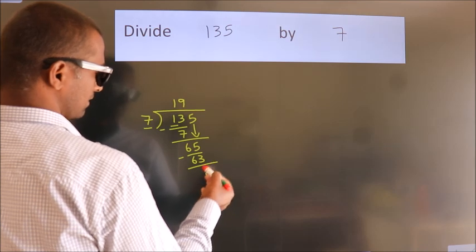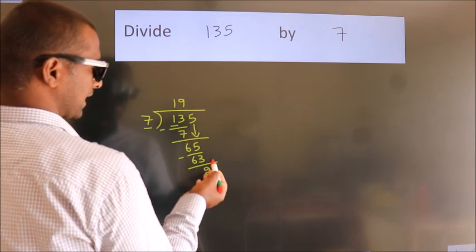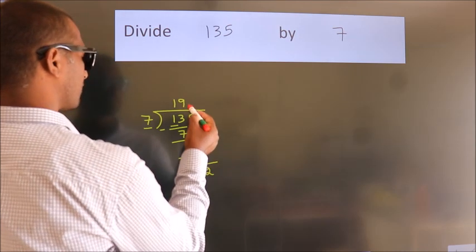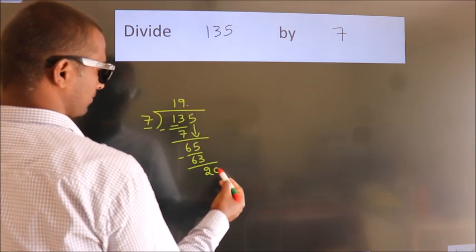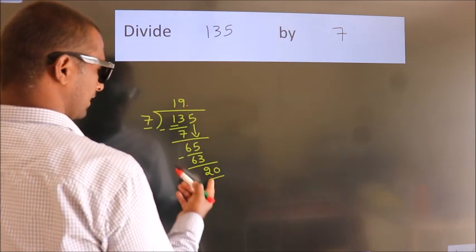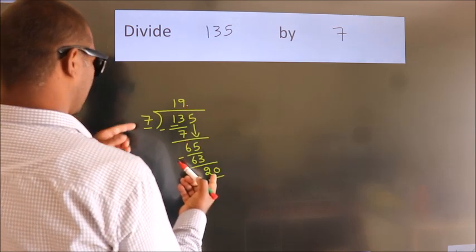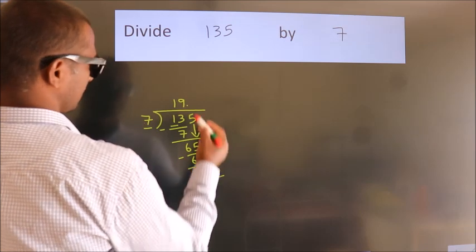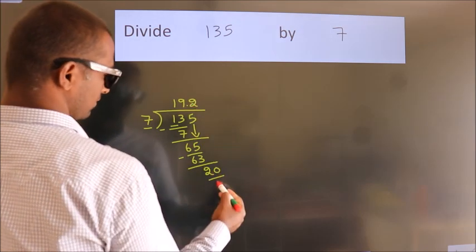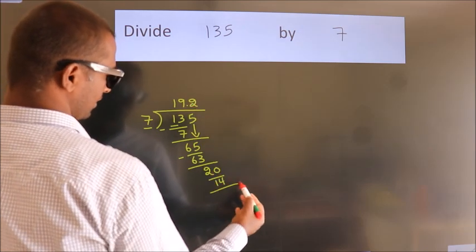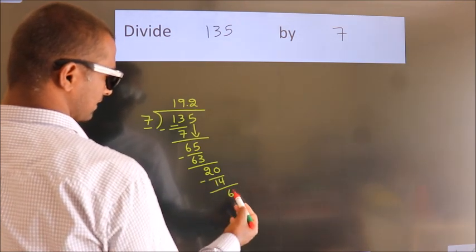After this, no more numbers to bring down. So what we do is we put a dot and take 0. So 20. A number close to 20 in the 7 table is 7 times 2 is 14. Now we subtract. We get 6.